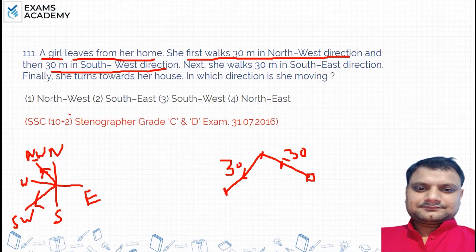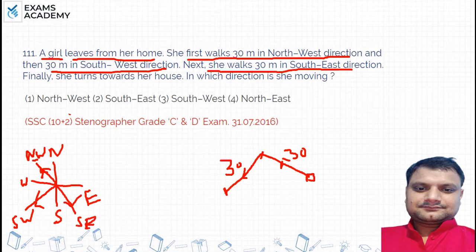Next, she walks 30 meters in the south-east direction. South-east direction — which is between south and east — this is the south-east direction. So she goes 30 meters in the south-east direction and reaches this new point.